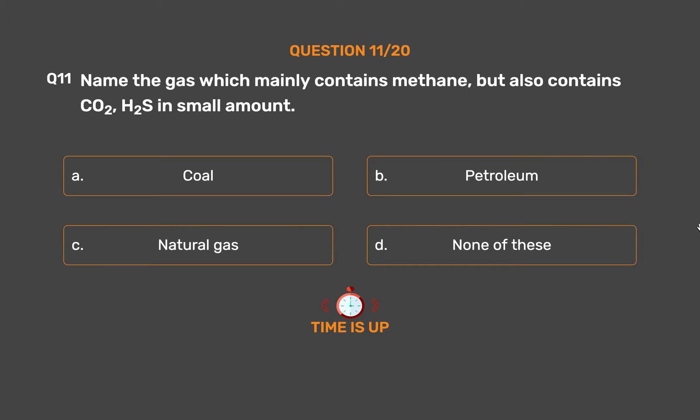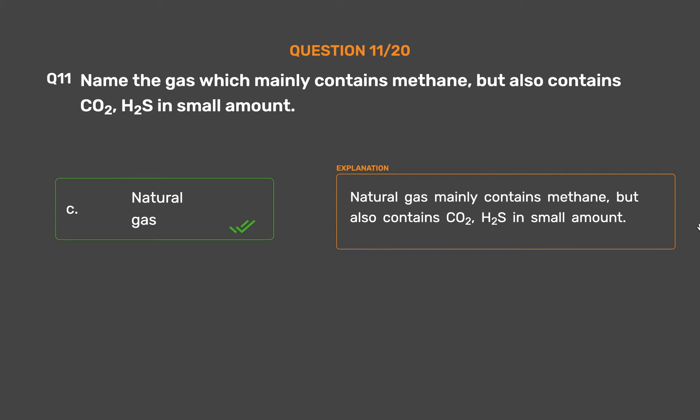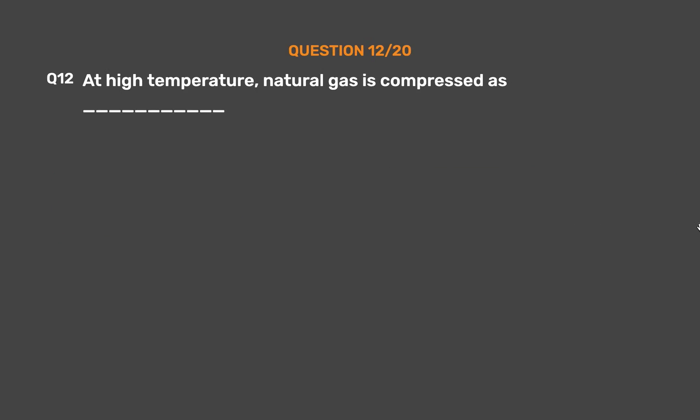The correct answer is Option C: Natural gas. Natural gas mainly contains methane, but also contains CO2 and H2S in small amounts.